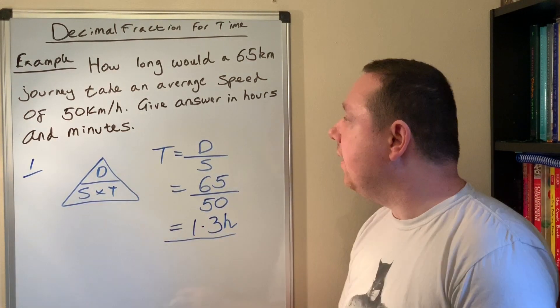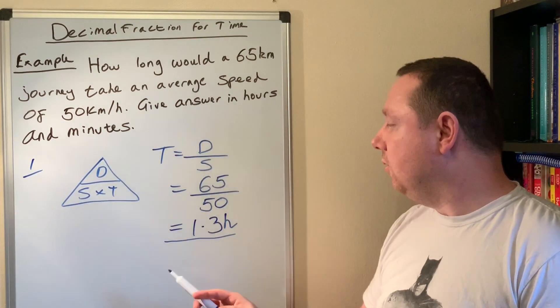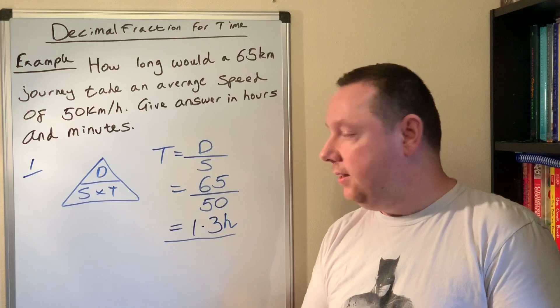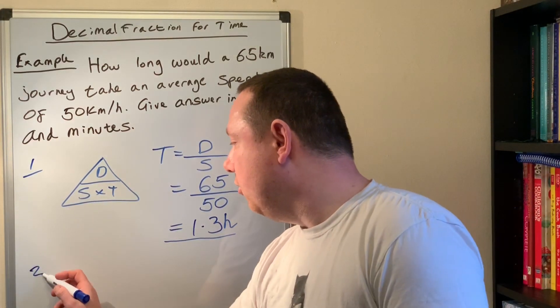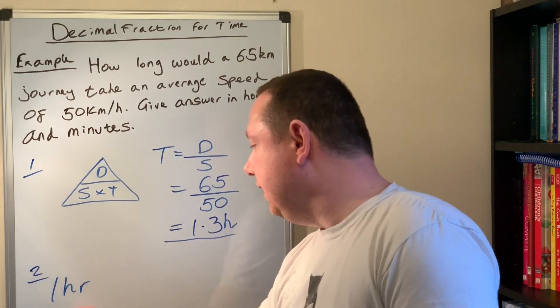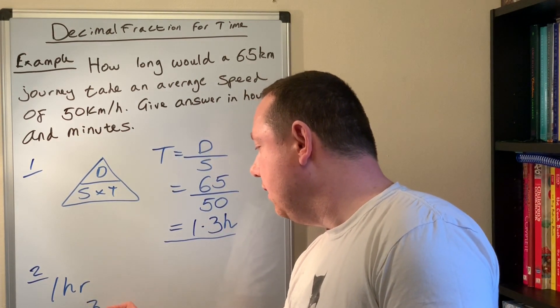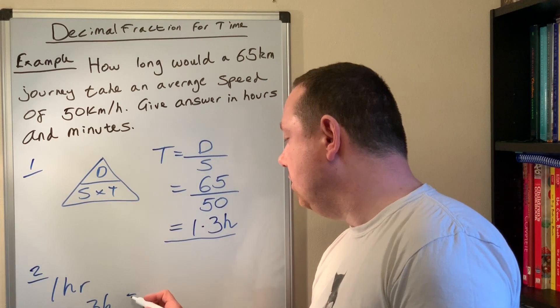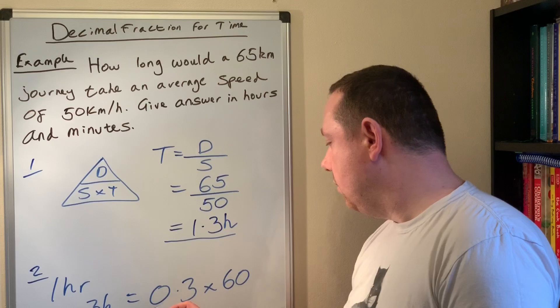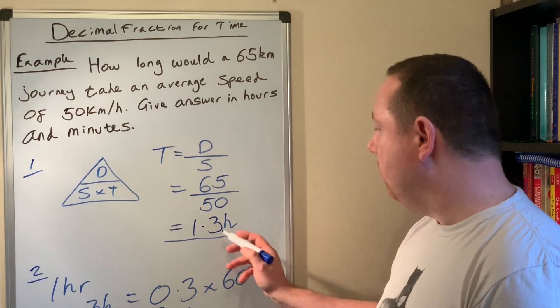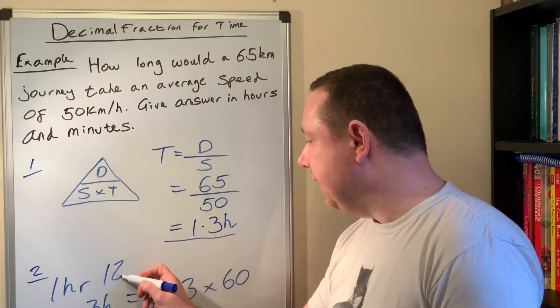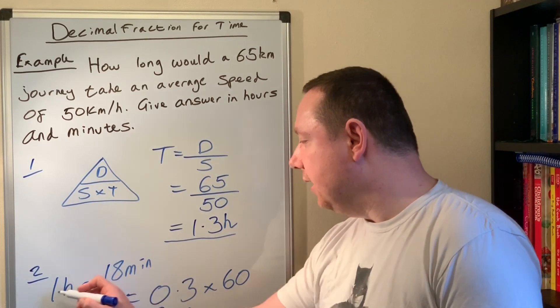But if I look back at my question, it says give answer in hours and minutes, so we'll have to change this 1.3 to hours and minutes. I've already got one hour, but I've got the 0.3, so the 0.3 I need to change to minutes. So I times that by 60: 0.3 times 60, which is 18 minutes. Now my 1.3 hours is one hour 18 minutes, and that's my final answer.